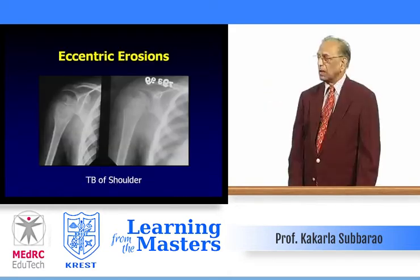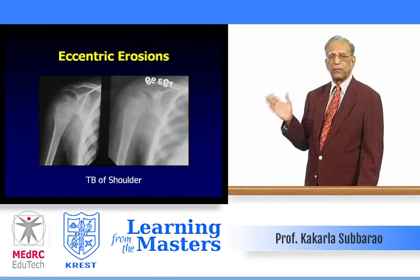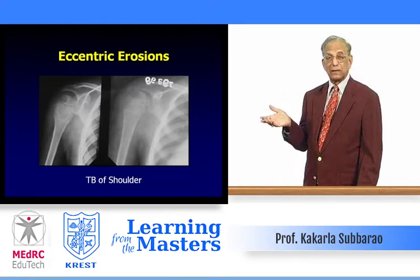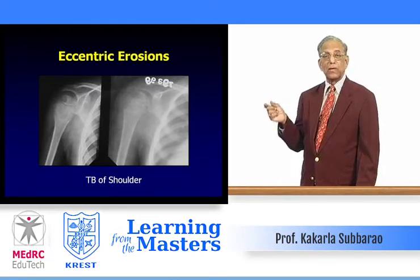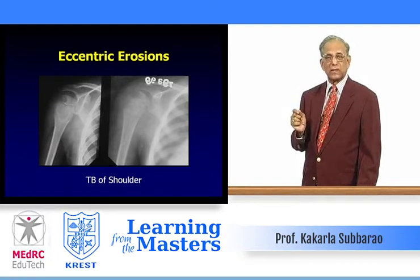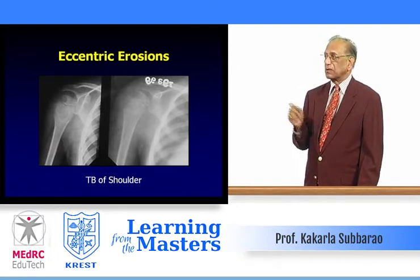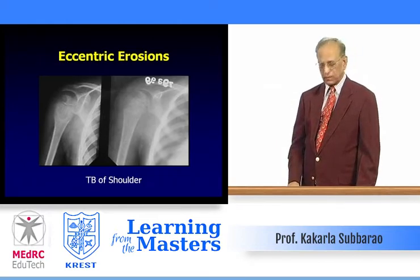Apart from tophi in subarticular areas extending into soft tissues, tophi may also occur in bone, simulating a tumor. In tuberculosis of the shoulder, the Phemister's triad is relevant: relative sparing of the joint space, osteoporosis, and peripheral eccentric erosions.